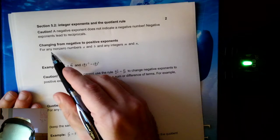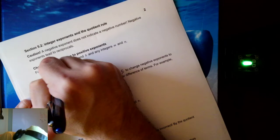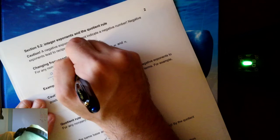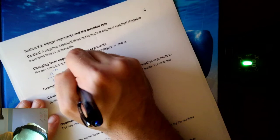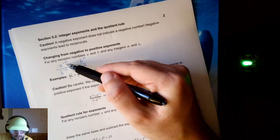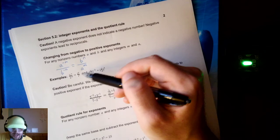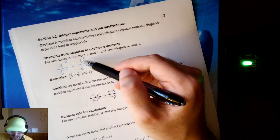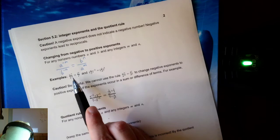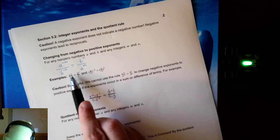For any non-zero numbers a and b and any integers m and n, a to the negative m over b to the negative n will equal b to the n over a to the m — they become positive and switch sides. I like to think of the negative exponent as the key that allows you to move from numerator to denominator; by doing so, you use your key and it becomes positive. In our example, three to the negative five over two to the negative four becomes two to the four over three to the five — the two moved up, the three moved down, exponents became positive.